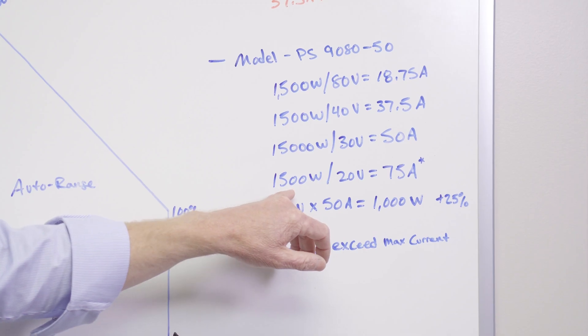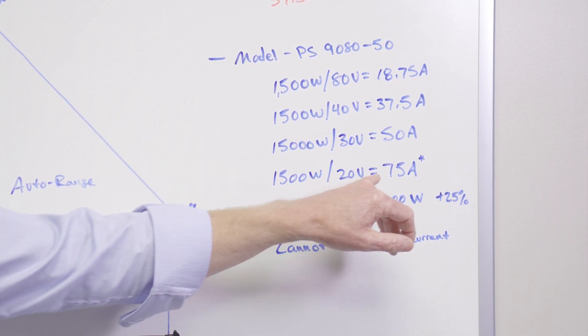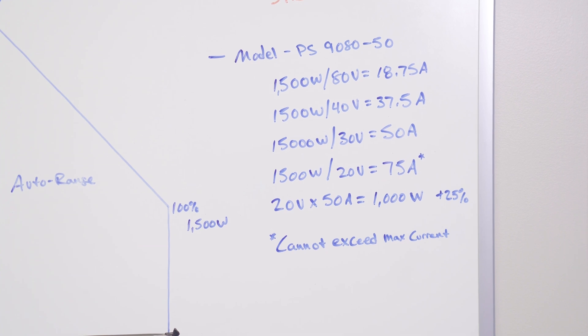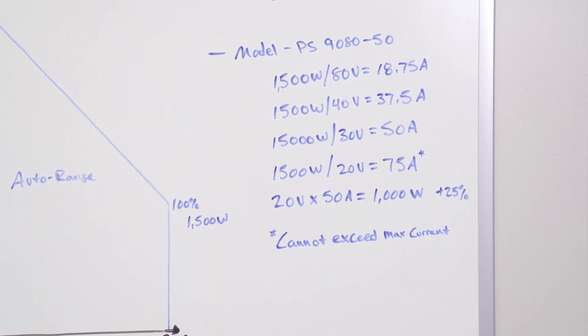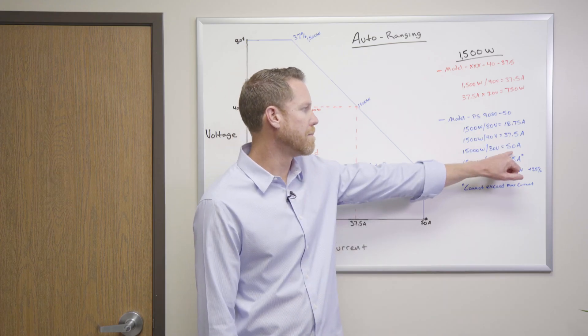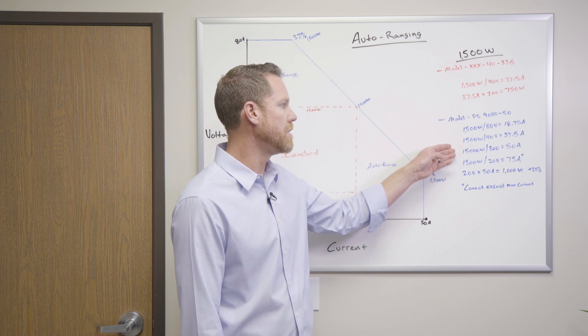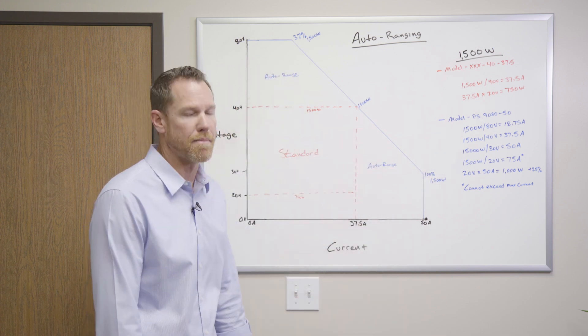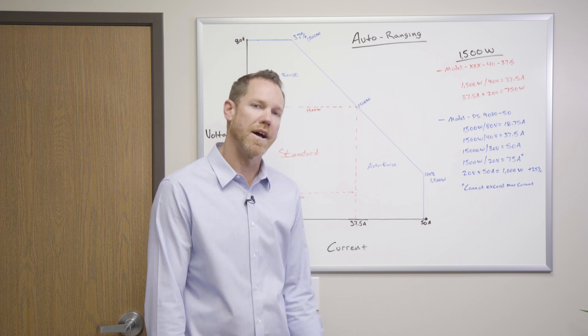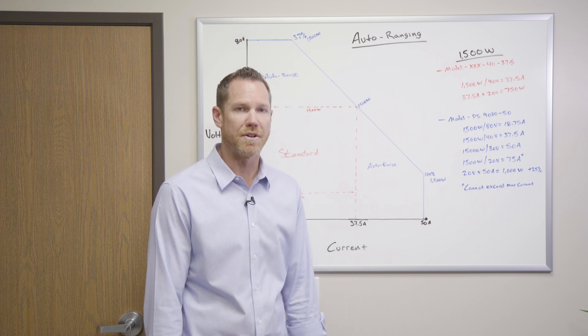Now, take this same 1500 watts divided by 20 volts and you get 75 amps. Well, the source itself is only limited to 50 amps. So you're not going to get 75 amps out of the source. So it's still limited to the maximum amount of current. But as you can see, you get a much wider operating range and envelope on the output of the power supply. So now let's go ahead and go out to the lab and we'll take a look at it in real time.